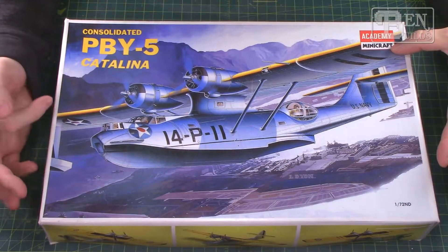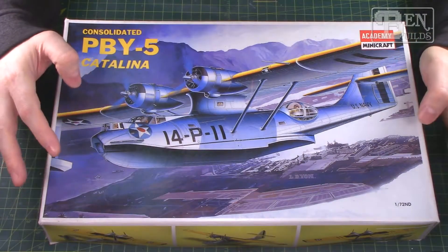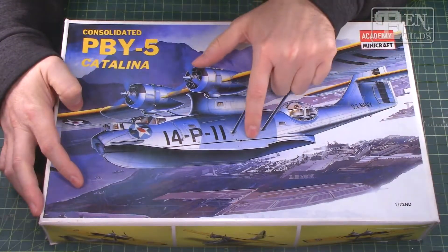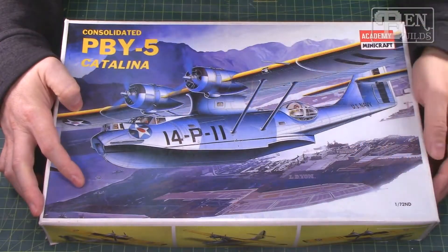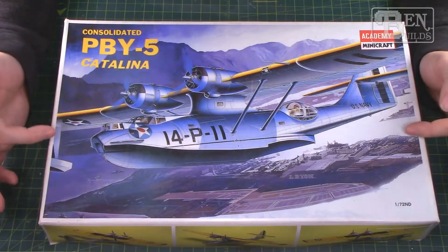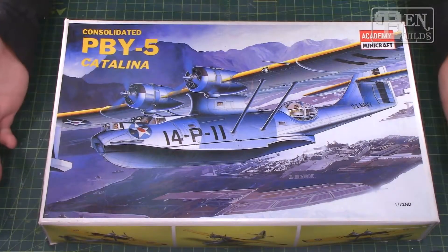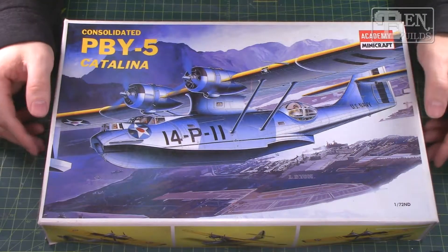This is what we're going to be building. This is the 1/72nd scale Consolidated PBY-5 Catalina, this is by Academy Minicraft. So it's an older Academy kit. As you can see it is not the dash 5A, it's just a dash 5. There are no retractable landing gear, so that should be actually kind of interesting to do, but it does kind of beg the question of how we're going to go ahead and display it.